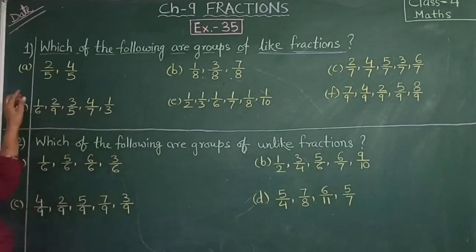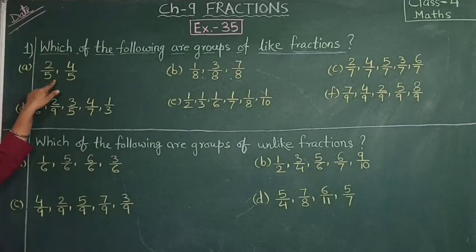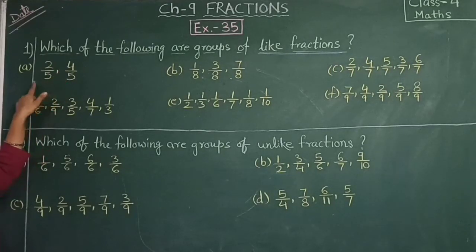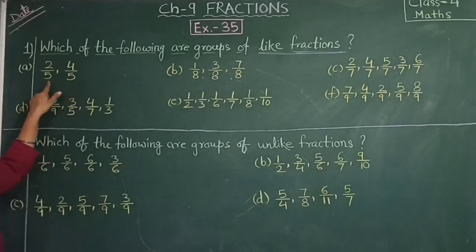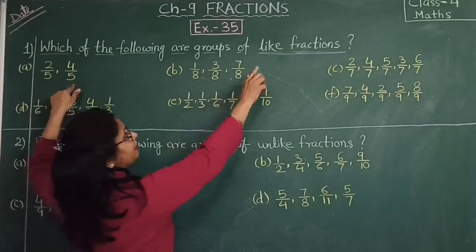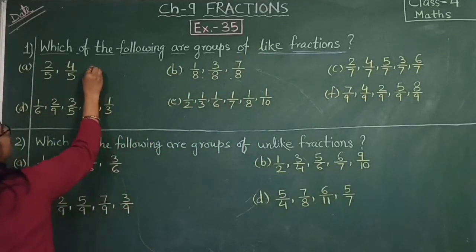Question A: 2 by 5, 4 by 5. Is the denominator the same? Yes, same — 5 and 5. So this is a like fraction. Yes, this is a like fraction.